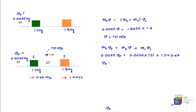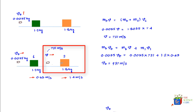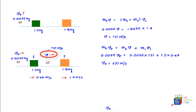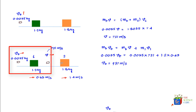Substituting values: 0.0035 times V naught equals 0.0035 times 721 plus 1.2 times 0.63. Solving for V naught gives approximately 937 meters per second. In summary, we first found the bullet's intermediate velocity using the second collision, then used that result to find the initial velocity from the first collision.